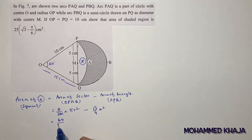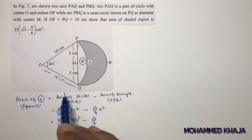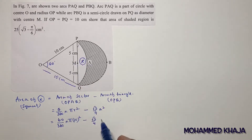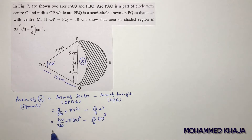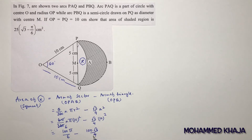Substituting: θ = 60, so (60/360) × π × 10² minus (√3/4) × 10². This simplifies to 100π/6 minus 100√3/4. This is the area of segment X.